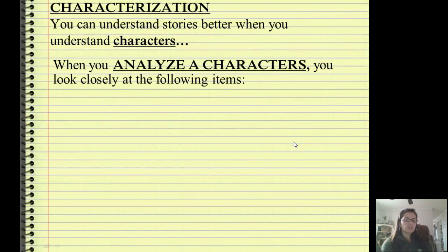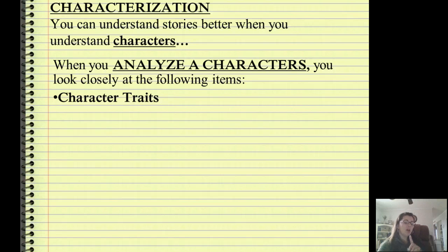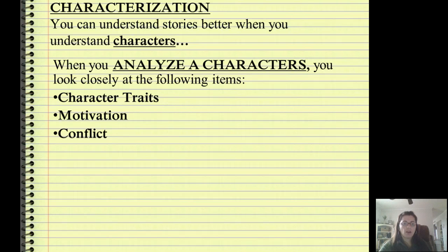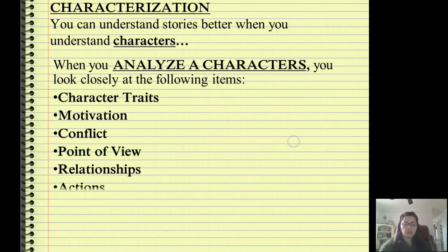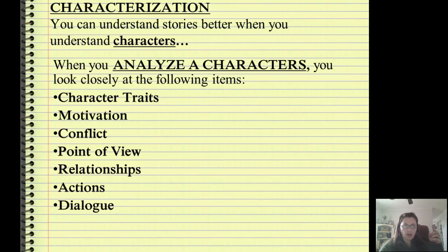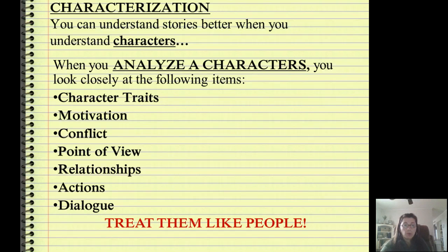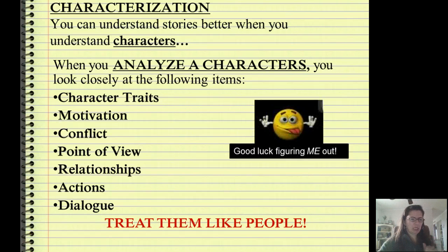Next we have characterization. You can understand stories better when you understand characters. When you understand characters, you look closely at: first, character traits; second, motivation — what makes this character act the way they do; third, conflict — what are they facing; fourth, point of view; fifth, relationships to other people in the story; sixth, actions; and seventh, dialogue. Look at all of those things and infer. Use common sense. Explain to yourself why a character might act the way they do, then think like the author — why would he want his character to act this way? Treat characters like real people and try to figure them out.